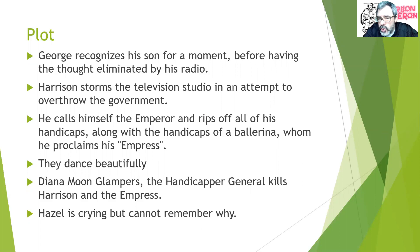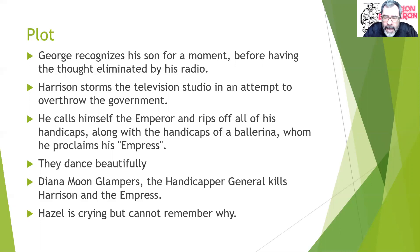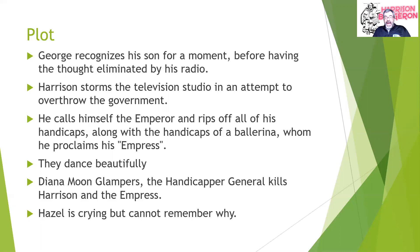Harrison storms into the TV studio recording the ballet, rips off all his handicaps, and declares himself Emperor. He says those who help free others will be his dukes and earls, and one of the dancing women agrees to be his Empress. He rips off her handicaps and they dance beautifully and magnificently — Vonnegut says they kiss the ceiling, which is overstatement. Then in comes Diana Moon Glampers, the Handicapper General, who kills them both with a ten-gauge shotgun. We cut back to Hazel, who has tears on her cheeks; when George asks what's the matter she says she doesn't remember, and the story ends.